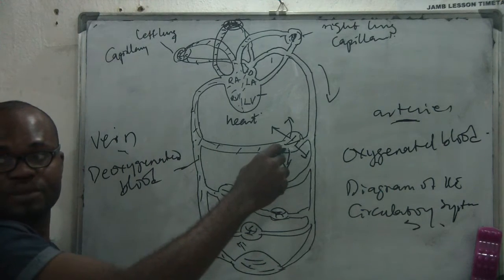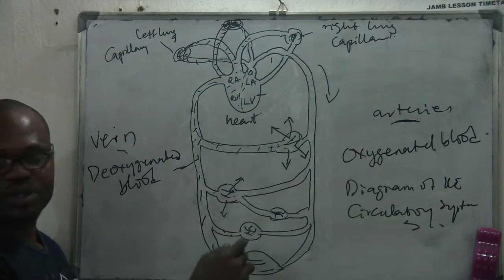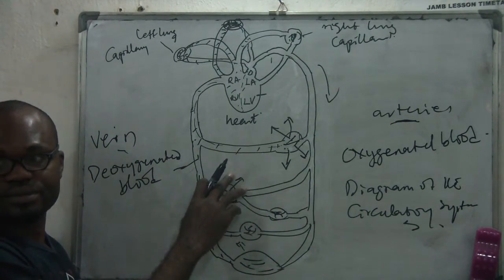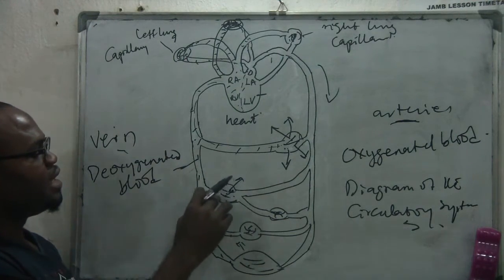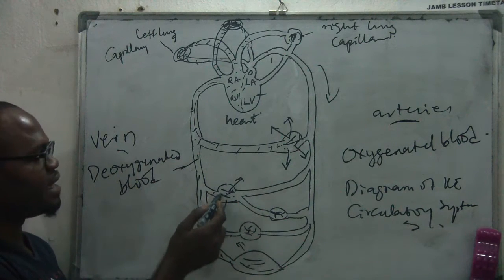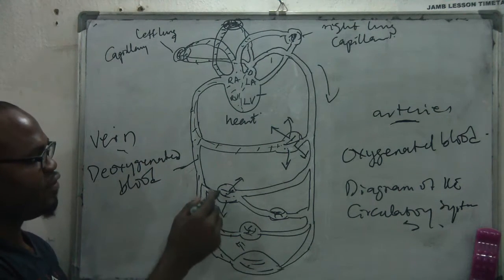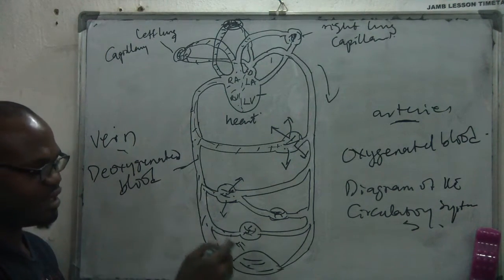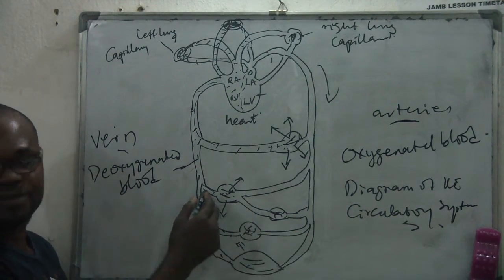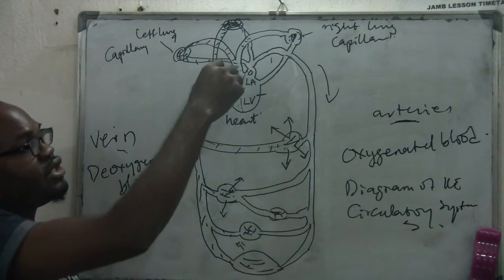The arteries carry oxygenated blood to the stomach, the legs, and other parts of the body. When it gets to the artery, oxygen is passed to the body. The blood that has lost its oxygen will then enter the veins — from the stomach, the legs, the hands, and everywhere — and the veins will take it back to the heart and lung section.